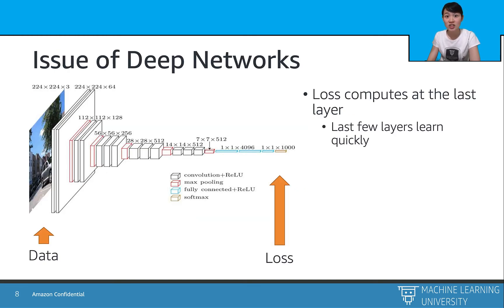If we take a detailed look of any deep neural net during training, the loss calculation occurs at the last layer, so they learn quickly.